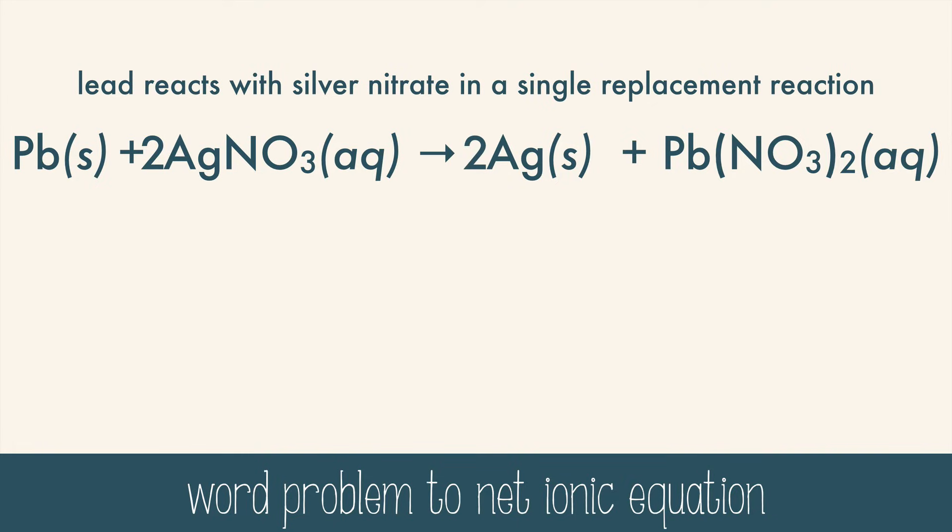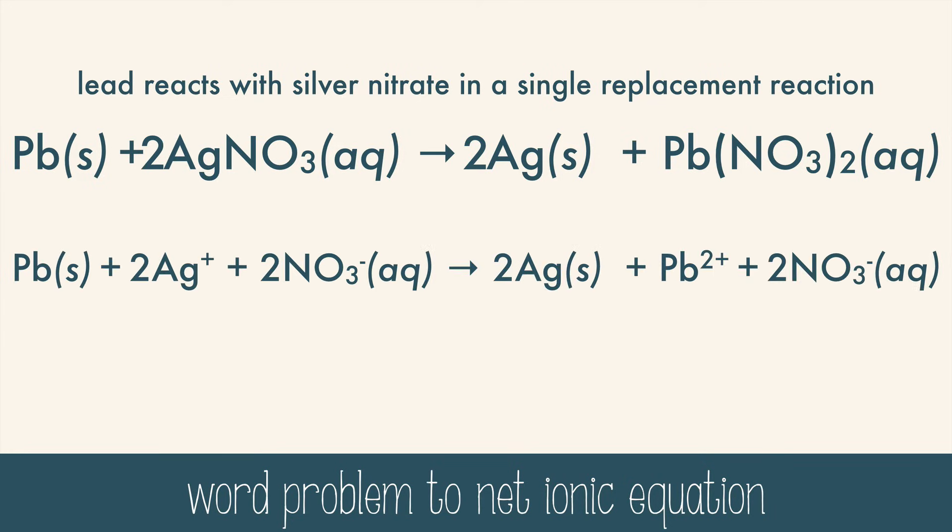Now we can write out the complete ionic equation. Write every ion for any aqueous chemical, but don't break up any solids. Identify the spectator ions by seeing them on both sides of the equation, and cross them out. Then you can write the net ionic equation. The number of atoms and the charge is the same on both sides. There are two positively charged silver atoms and a lead atom with a 2+ charge, so those are equal.